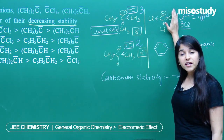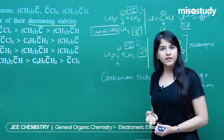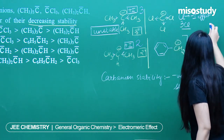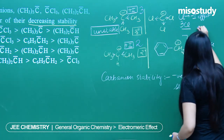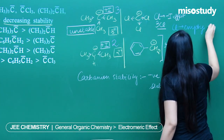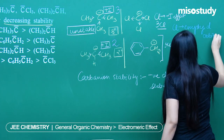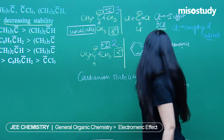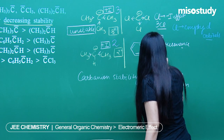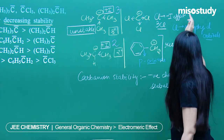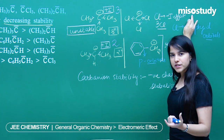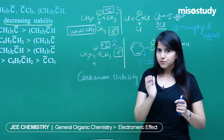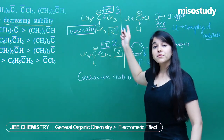The key reason CCl3 negative is most stable is that chlorine has empty d-orbitals, whereas carbon has only p-orbitals. Dispersing the negative charge into d-orbitals provides greater stabilization because d-orbitals are larger, whereas p-orbitals are smaller. Therefore, the stabilization of the negative charge is highest in CCl3 negative due to the availability of empty d-orbitals on chlorine.